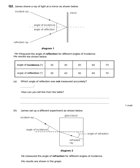This next question is about light — somebody is doing an experiment shining a ray of light on a mirror. The light shone on the mirror is called the incident ray, and the angle it arrives at is called the angle of incidence. The light bounces off the mirror — this is called reflection — and the reflected ray points away, with arrows showing the direction of travel. We also have the angle of reflection marked, and a dashed line called the normal line. He is measuring the angle of reflection for different angles of incidence.